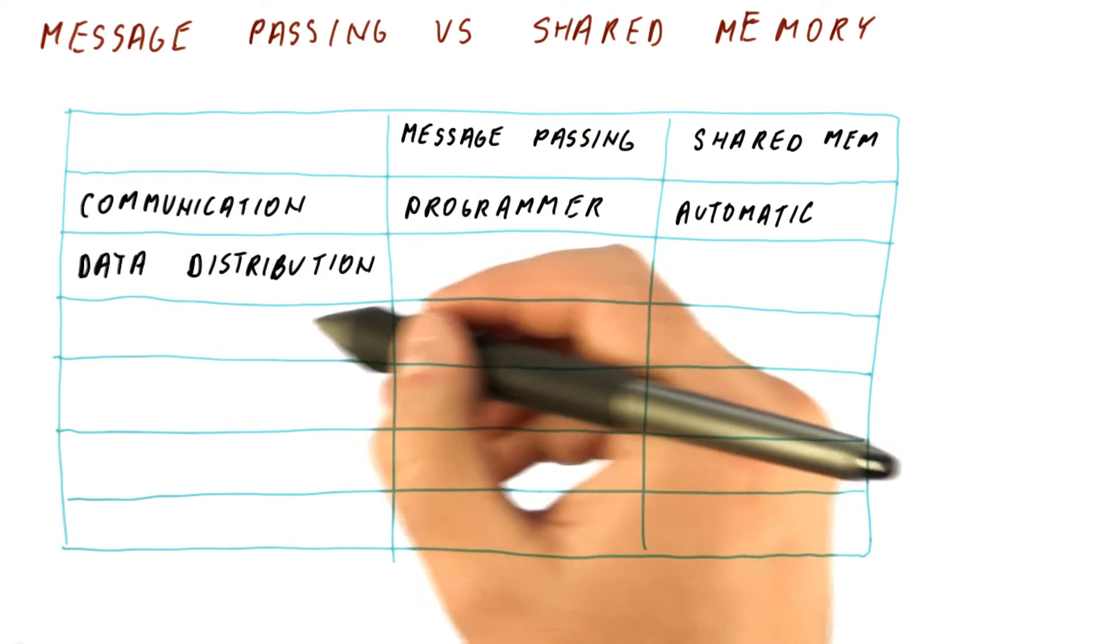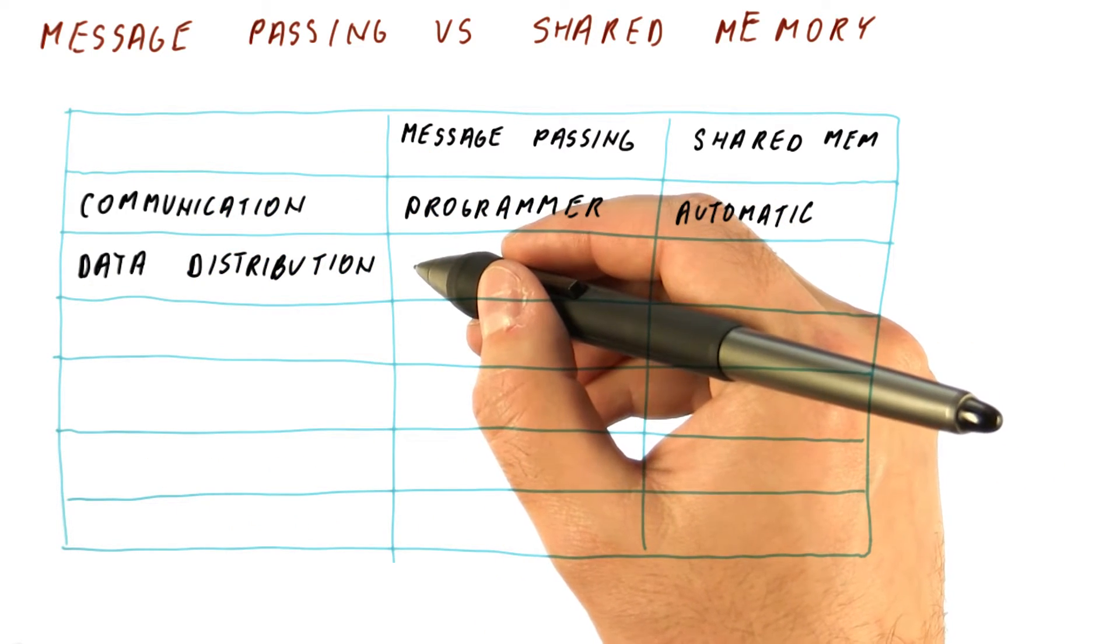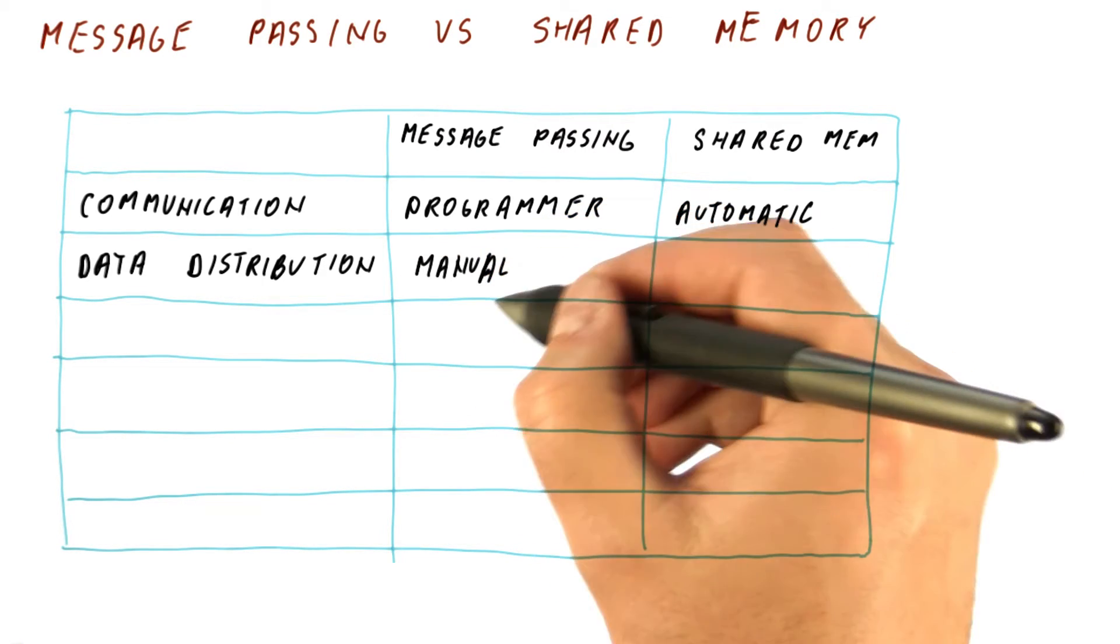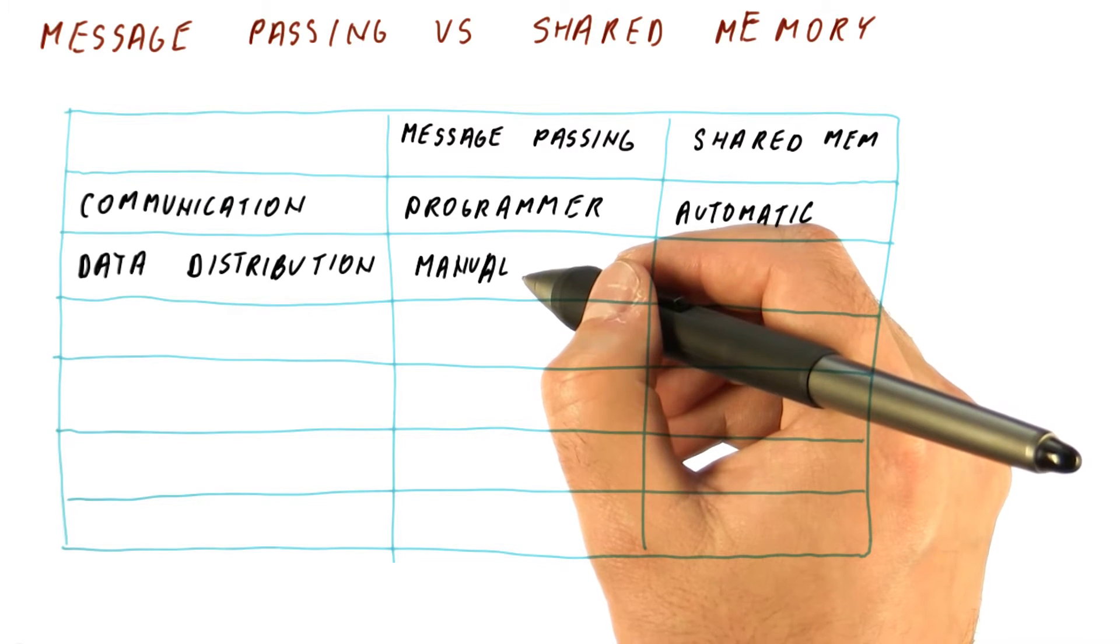As far as data distribution is concerned, that is, which cores get to have which data in their memory, the programmer needs to manually do this data distribution by explicitly sending the data to the cores that need it.